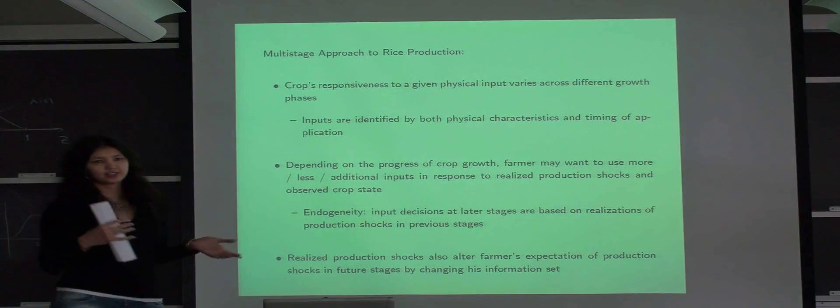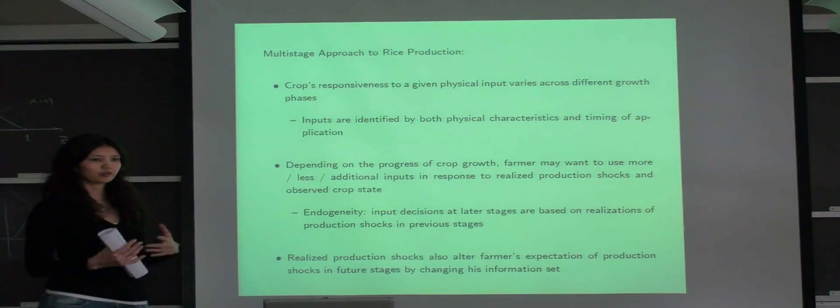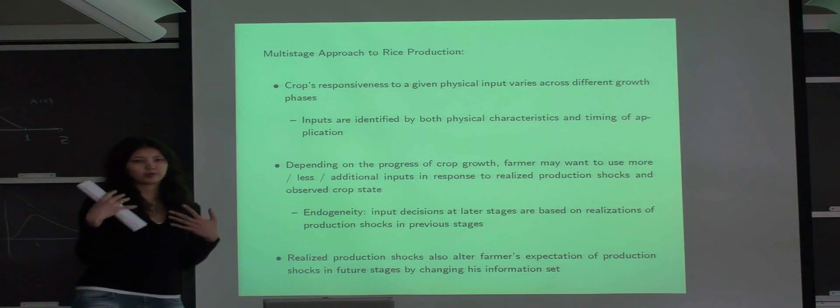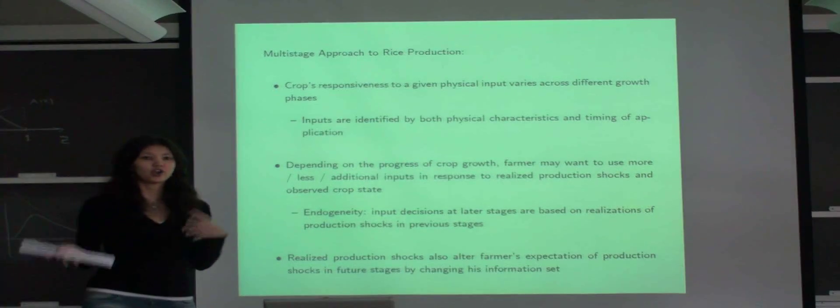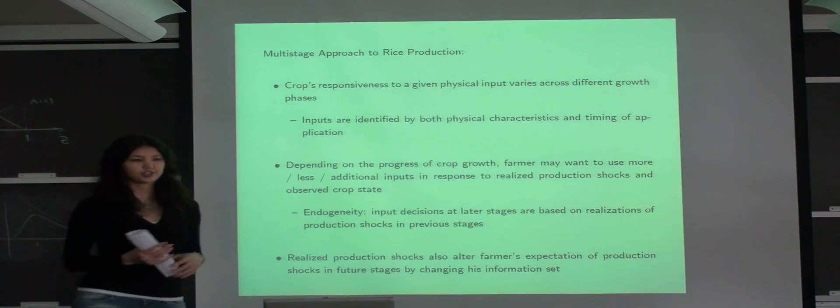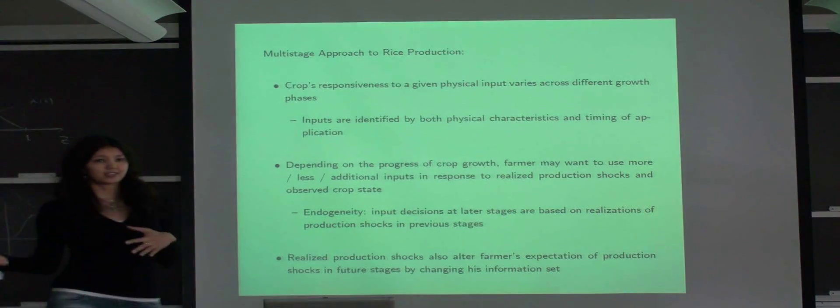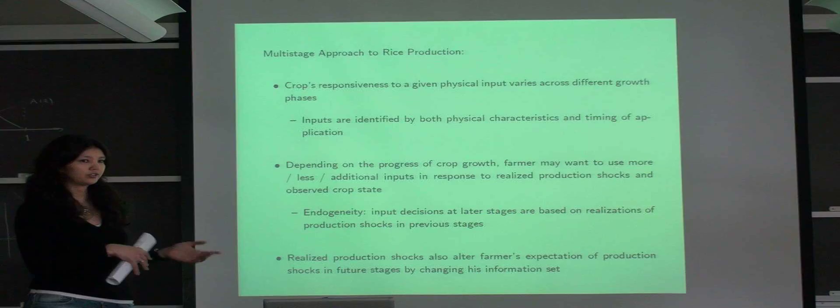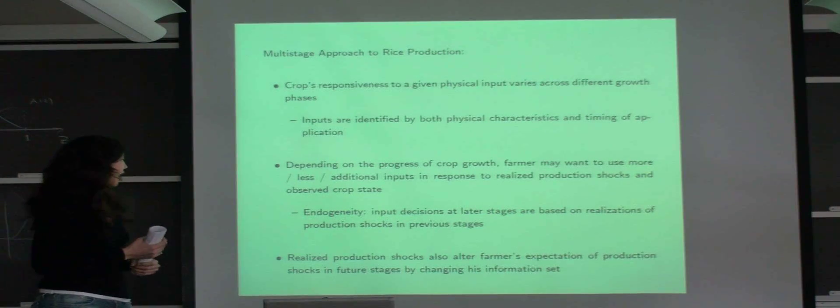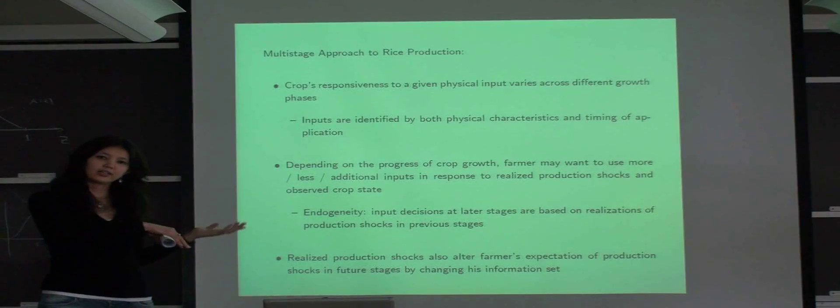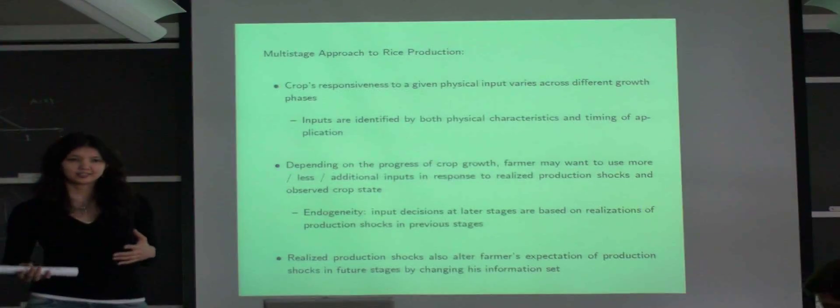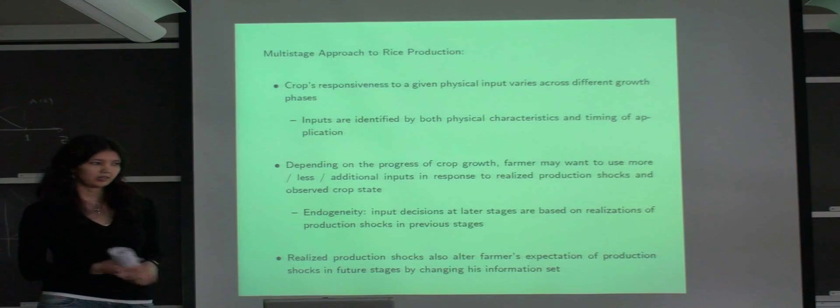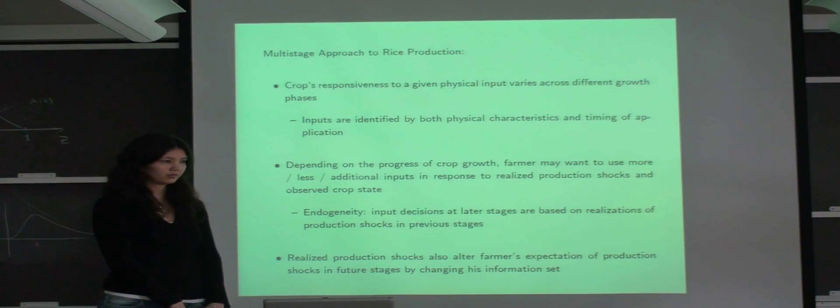Also, farmers may adjust or change their input choices depending on the progress of crop development up to that point. And the progress of crop development in turn depends partly on the realization of production shocks earlier in the crop cultivation process. So farmers' input decisions later in crop cultivation process are made in response to production shocks realized earlier in the process. This gives rise to endogeneity. And also production shocks realized earlier in the cultivation process update farmer's information set and update his expectations of future production shocks later in the stage.